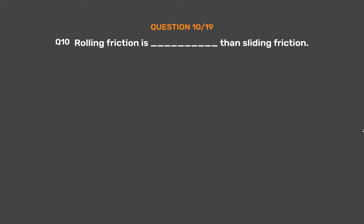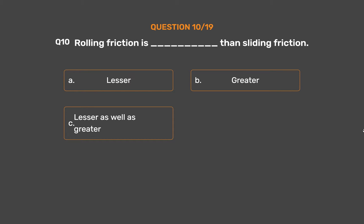Question number 10. Rolling friction is blank than sliding friction. Option A: Lesser. Option B: Greater. Option C: Lesser as well as greater. Option D: None of these.